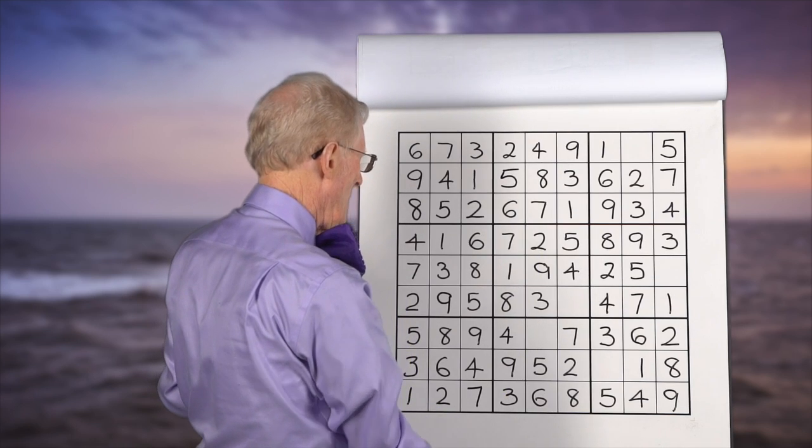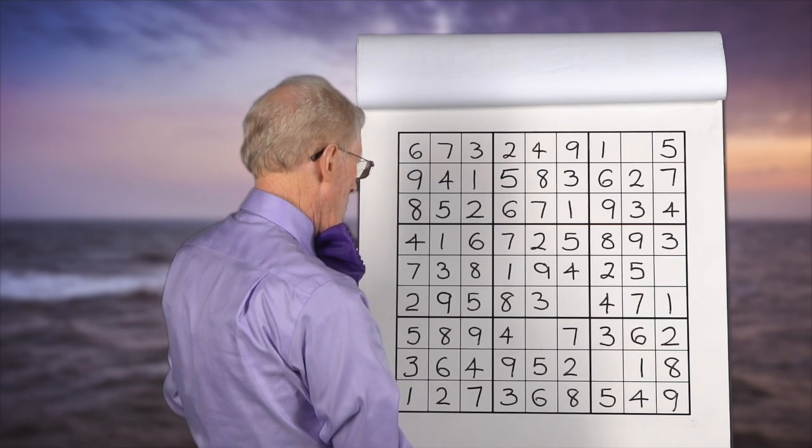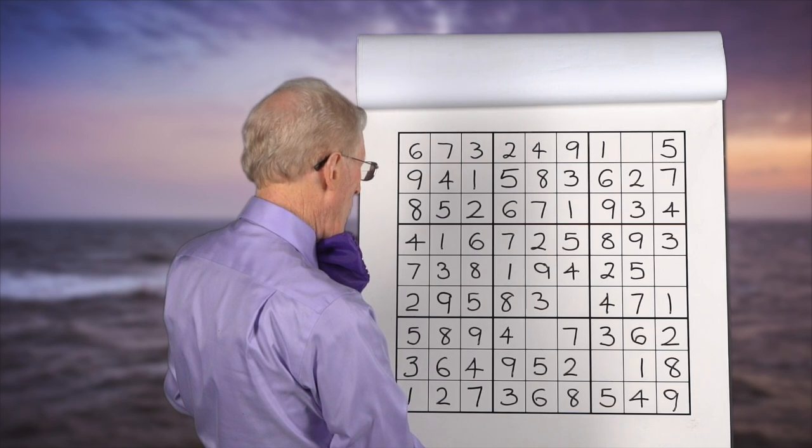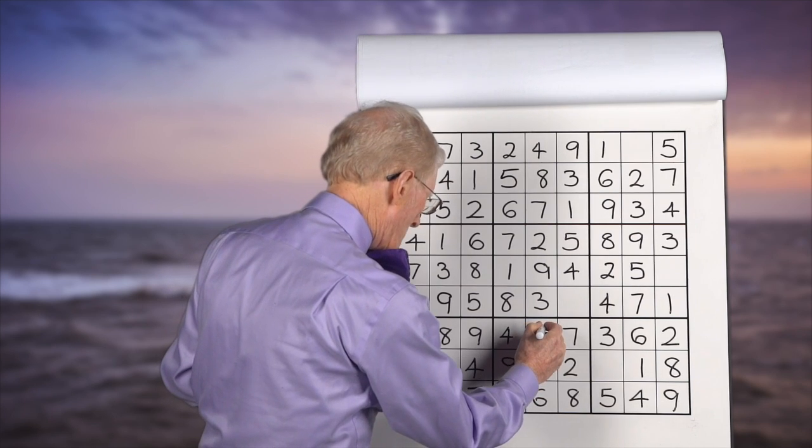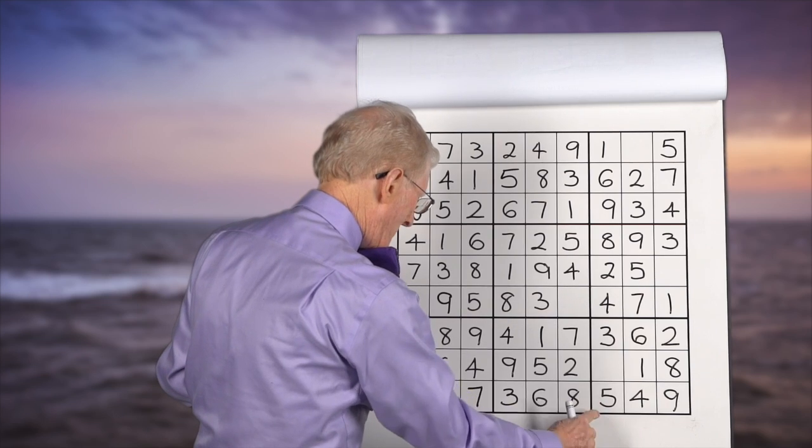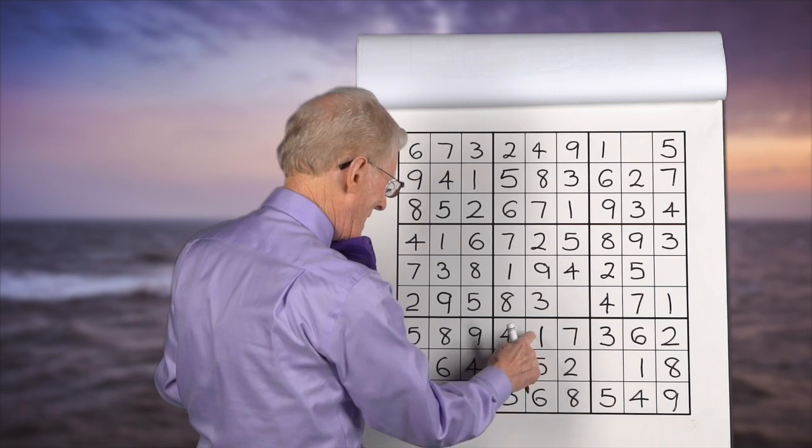Now let's do this column. 1... Oh, guess what? I think it's a 1. It is a 1. And we can check this block out now because that was the block that had an empty cell in it.